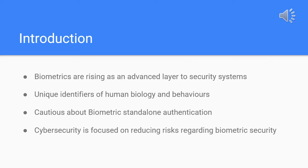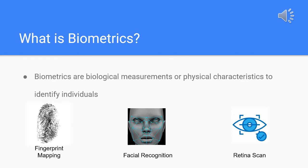Biometrics are arising as an advanced layer to many personal and enterprise security systems. With the unique identifiers of your biology and behaviors, this may seem foolproof, however that is not always the case. Biometrics aims to replace traditional passwords by linking proof of identity to our bodies and behavior patterns. For a quick definition, biometrics is biological measurements or physical characteristics that can be used to identify individuals — for example, fingerprint mapping, facial recognition, and retina scans.